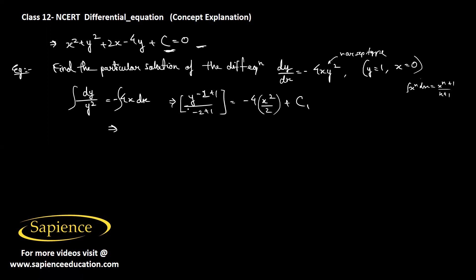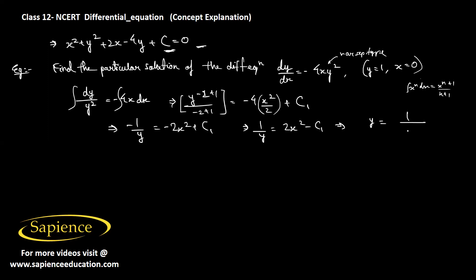This simplifies to −1/y equals −2x² + c₁, so 1/y equals 2x² − c₁, giving the general solution y equals 1/(2x² − c₁).